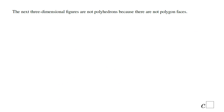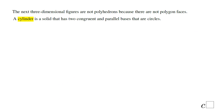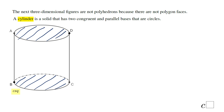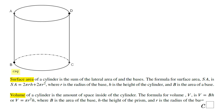Now we're going to look at some other three-dimensional figures that are not polyhedrons because they don't have flat polygon faces — like a cylinder. A cylinder is a solid that has two congruent, parallel bases that are circles. These are the circular bases.